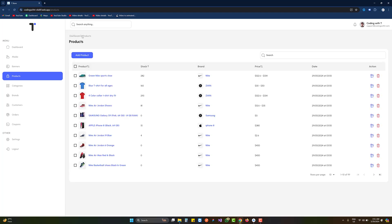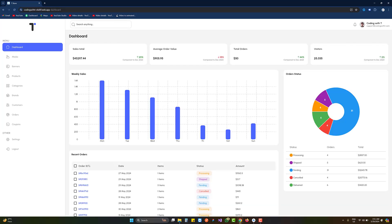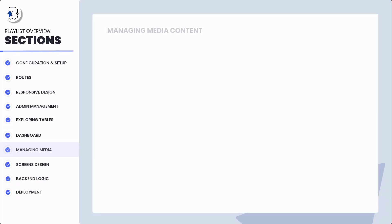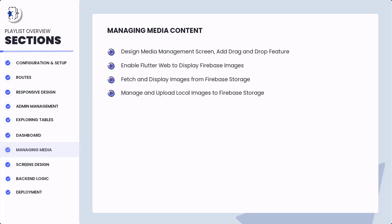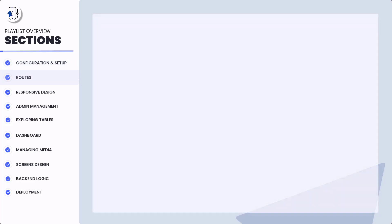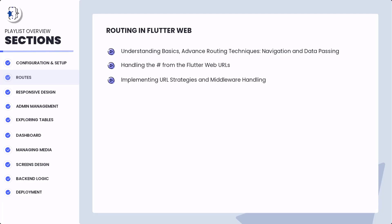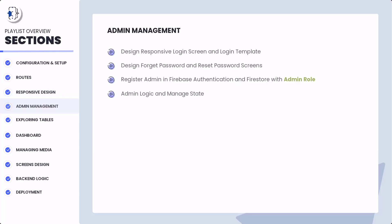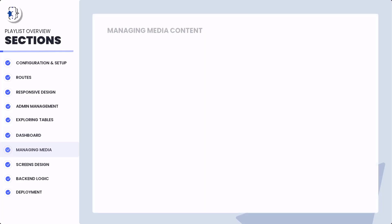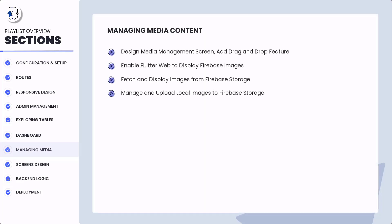We'll focus on the back arrow and URL navigation — clicking dashboard takes us back to the dashboard screen covered in previous tutorials. We're building a Flutter ecommerce admin panel in the seventh section, the media section. Previous sections covered: configuration, routing and navigation, responsive screens, admin management with role-based system, tables, and the dashboard. Today's tutorial is about adding breadcrumbs, and the next will cover drag-and-drop.